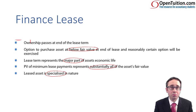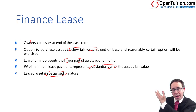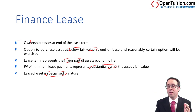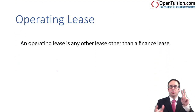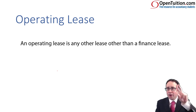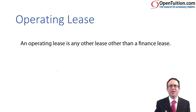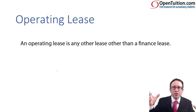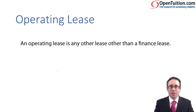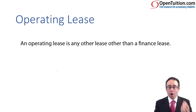That begs the question: what's an operating lease? What are the criteria for an operating lease? Quite simply, there are no criteria — there are only two types of lease: finance lease and operating lease, from a lessor accounting perspective. If we decide it's not a finance lease, it has to be an operating lease. There's no third or fourth type of lease. If it's a finance lease, treat it as a finance lease; if it isn't, it has to be an operating lease.